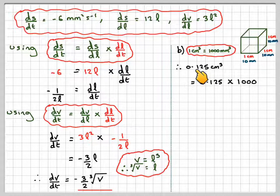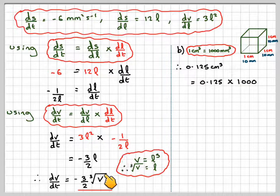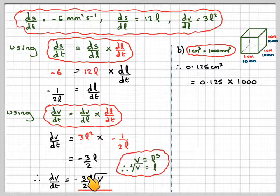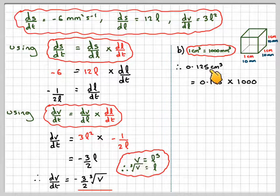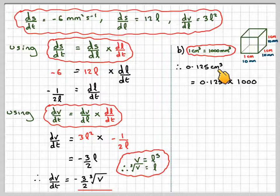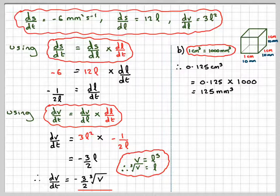We want to know the rate when the volume is 0.125 cm cubed. Converting it, we get 0.125 times 1000 equals 125mm cubed.